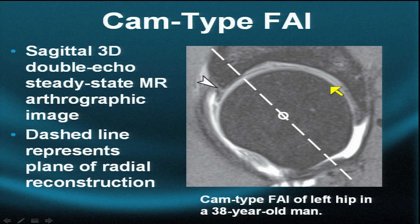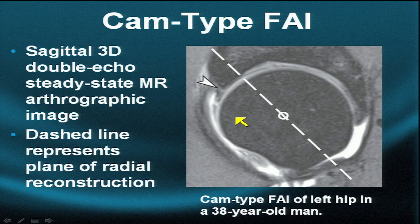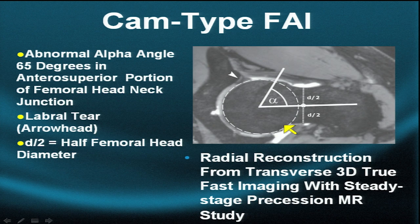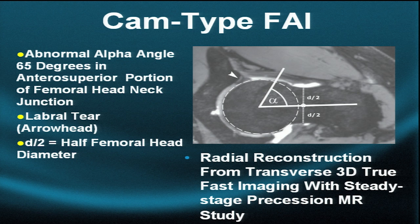Here's a sagittal demonstrating a labral tear in a patient with cam type impingement. The series of radial images will be obtained to look at the overall shape of the femoral head and neck — the dashed line represents just one of the many radial images that will be obtained. Here's an oblique axial image, which is used conventionally to measure the alpha angle.